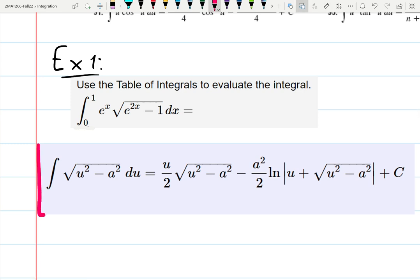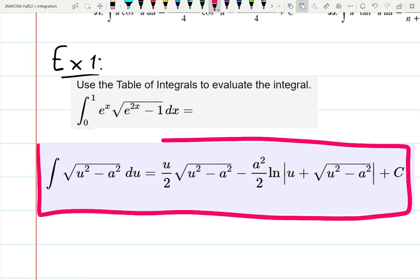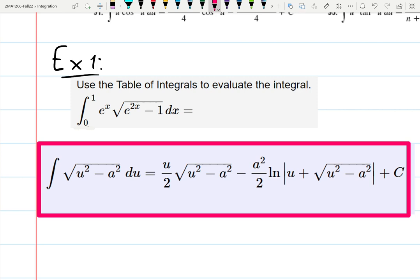We will use this integral: the square root of u² - a² du, and it has the answer. Your job is to match whatever you have with this result and use this result to find the answer for your integral. It's solving a puzzle - what do you see is common, what's different, what to change? After all, maybe you chose the wrong table integral; it might not work, then choose another one.